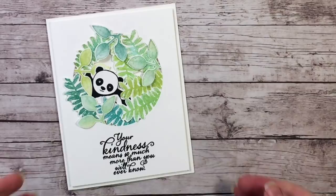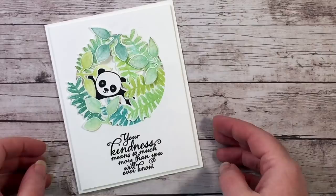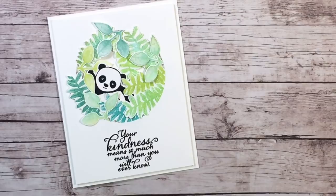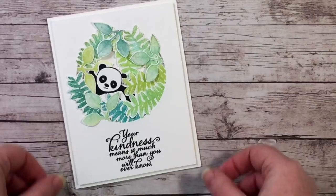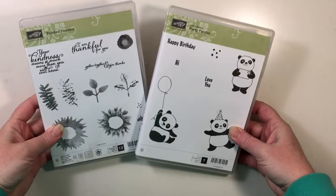I am using Party Pandas to create this fun little panda that's lost in the jungle here. So cute. And I am pairing it with the Painted Harvest stamp set. That is where the ferns and the leaves are coming from, as well as this beautiful sentiment down here. I can't wait to share with you how I made this card. Let's get started.